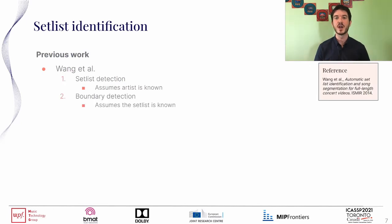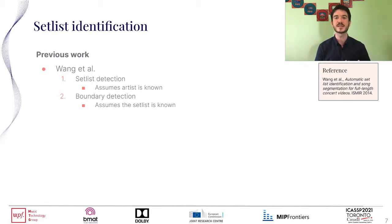As previous work, we could only find one research paper, from Izmir 2014. This paper divides the task into two subtasks: the first aims at identifying the tracks in the correct order, while the second aims to identify the correct timestamps. For the first subtask, the authors assume that the artist is known, so the reference corpus contains only the recordings of that particular artist. But this is likely to fail in cases where an artist plays songs of another artist.